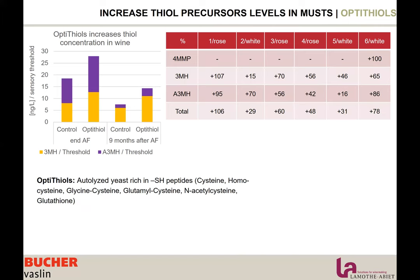The graph shows control versus Optitiol at 30 grams per hectoliter at inoculation. We can increase the amount of 3-MH and acetate 3-MH significantly. Also, nine months after alcoholic fermentation, this difference is maintained — the control is essentially closed and not aromatic, while the Optitiol wine is still fresh, aromatic, and thiolic. This result has been confirmed many times across six wines — both rosé and white — all showing an increase.